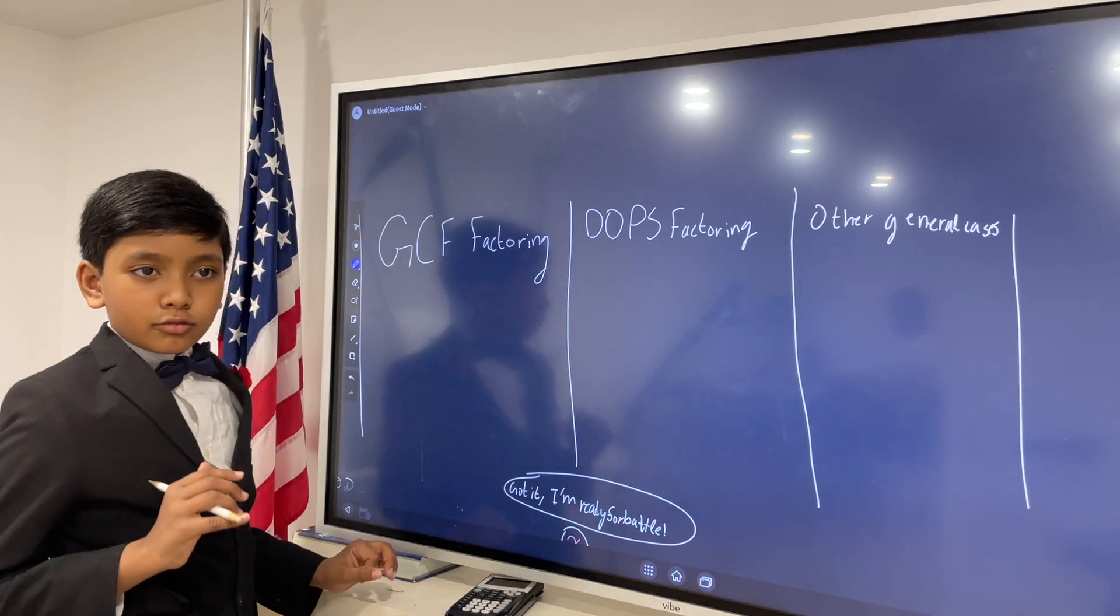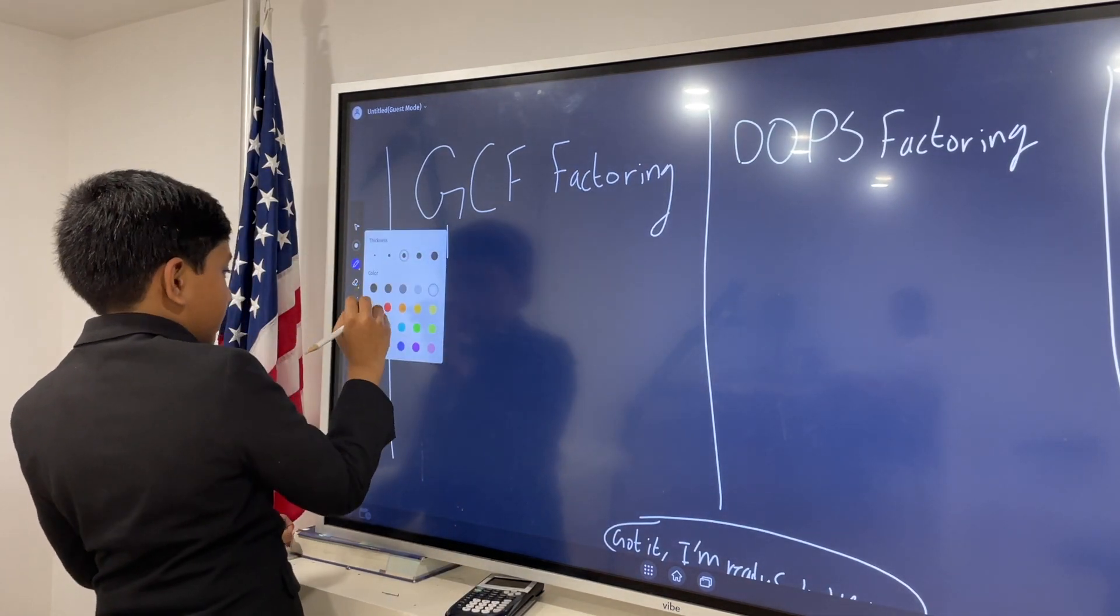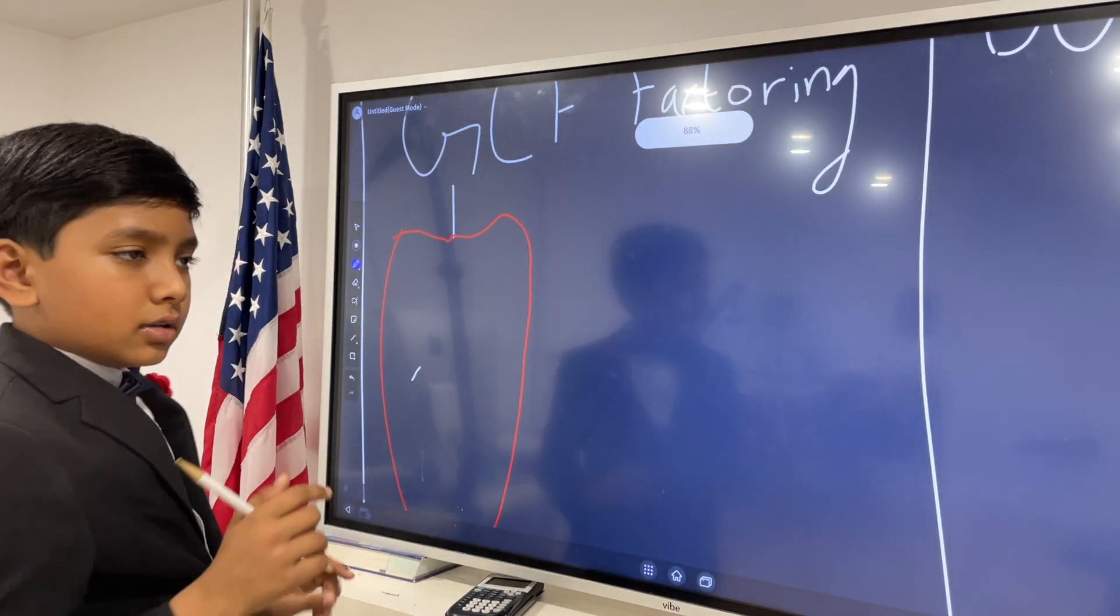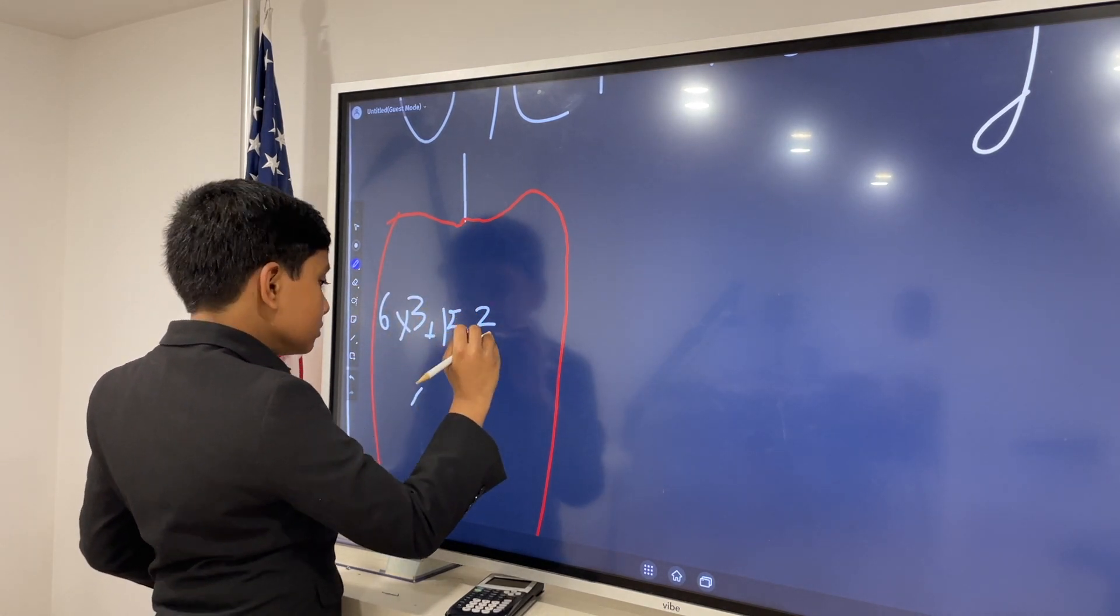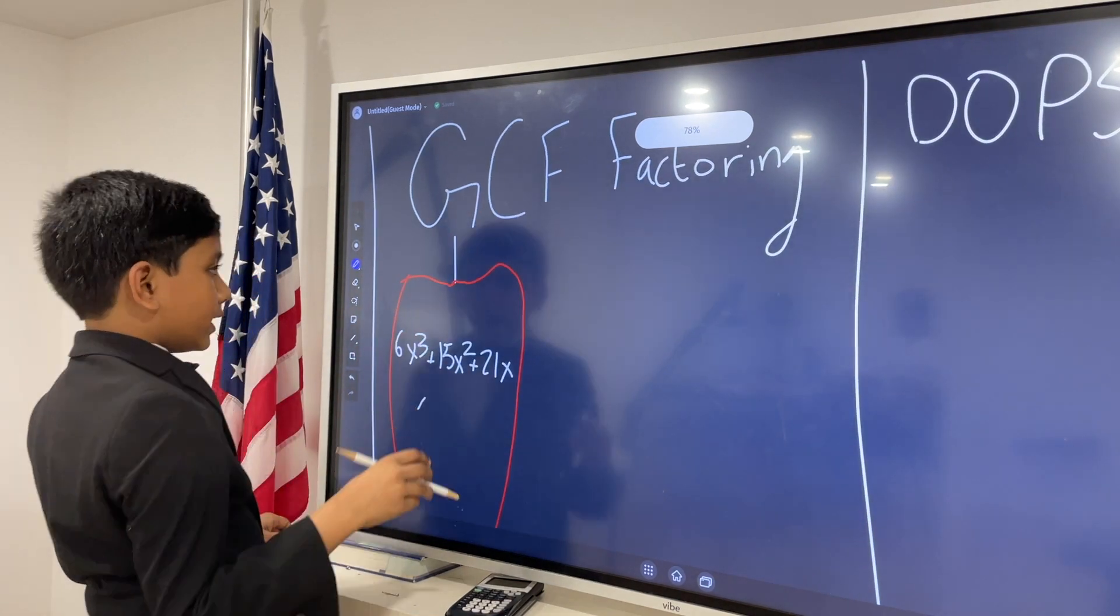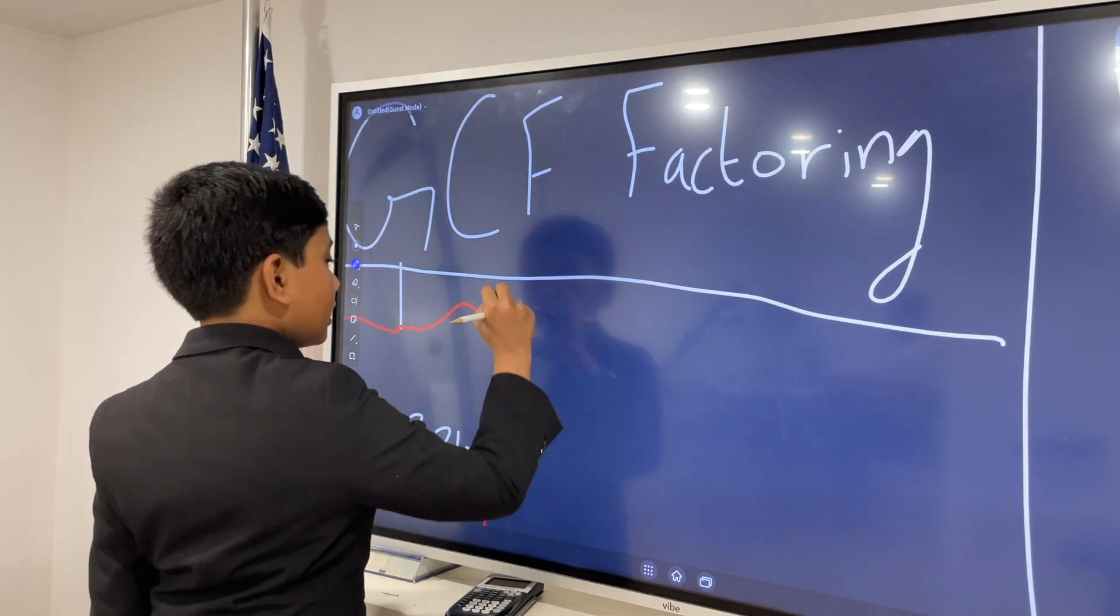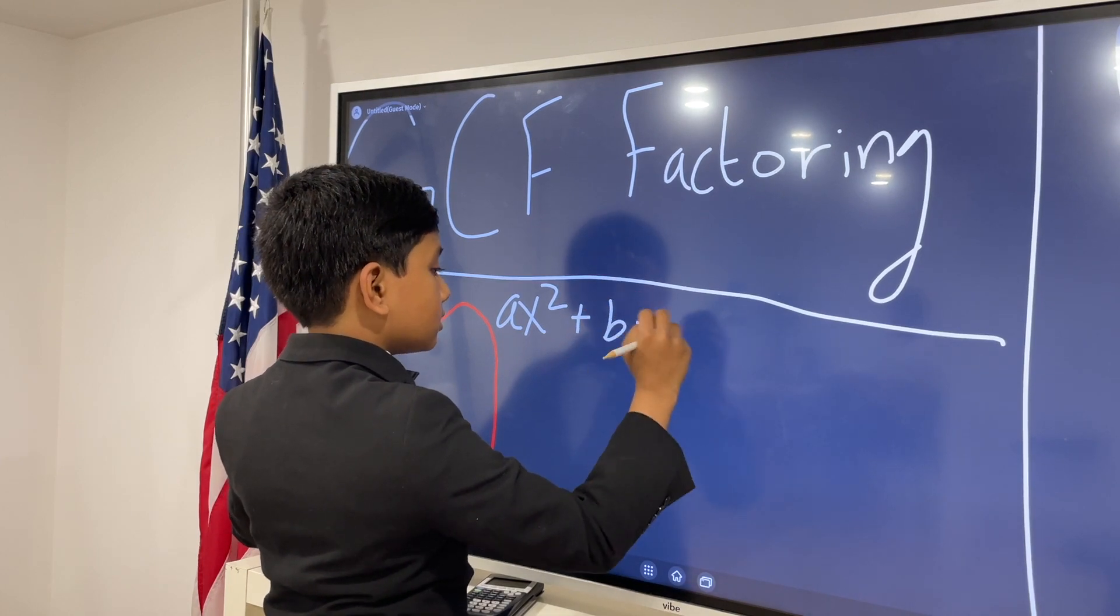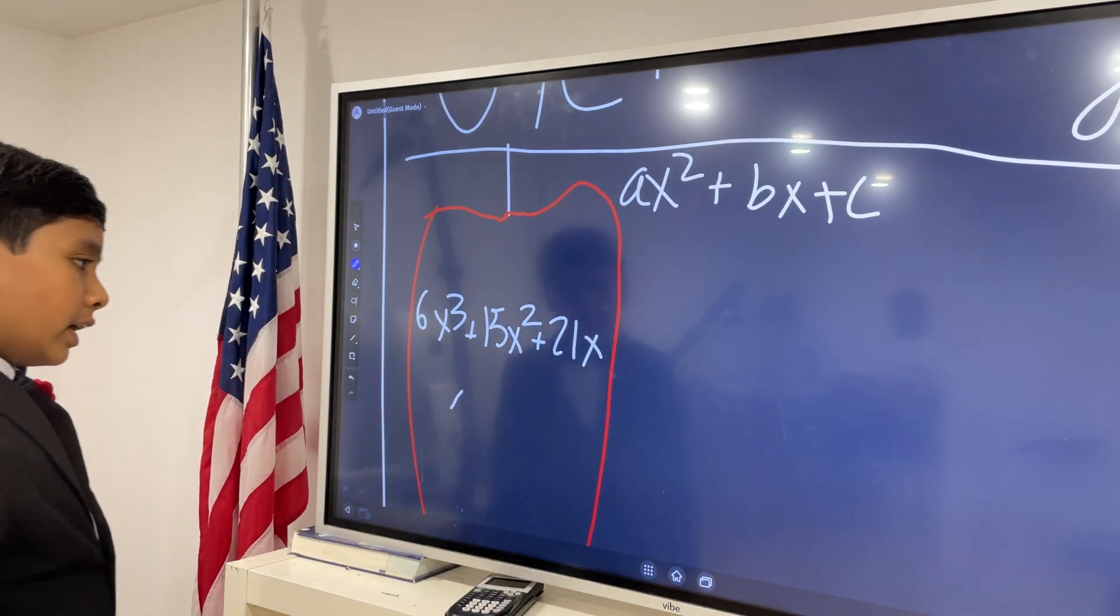Now we have to cover some stuff before we get into battle. First, greatest common factor factoring. We're going to have a punching bag for this first, because I know we need a punching bag for the real thing. Let's go for 6x cubed plus 15x squared plus 21x. Now, I mean the name of the GCF factory. You see a greatest common factor here.